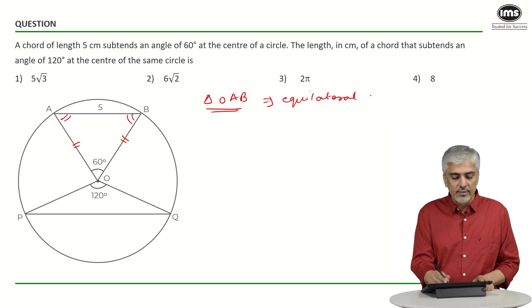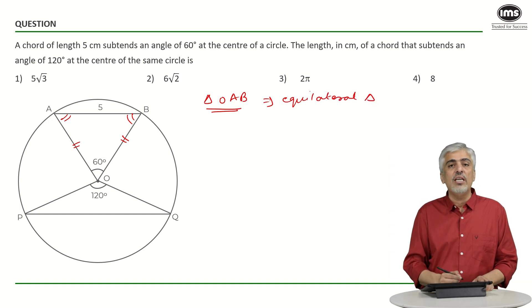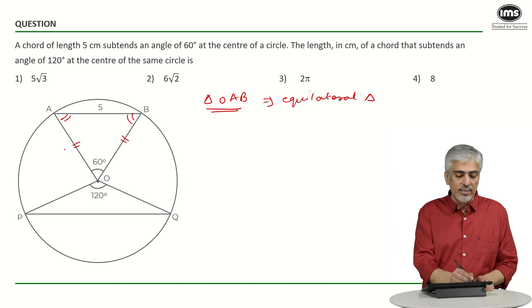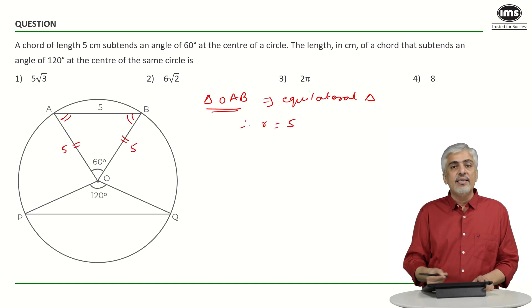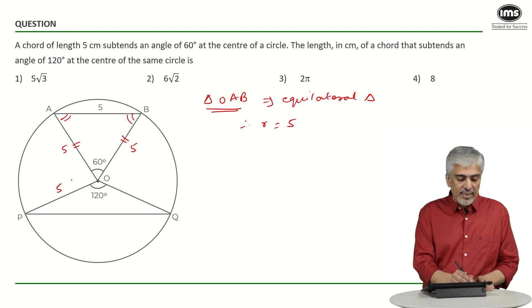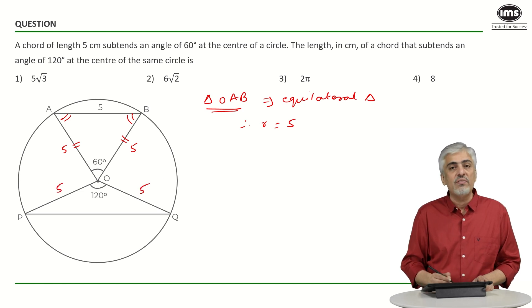Now, once I got triangle OAB is an equilateral triangle, I know that all sides are 5, 5, 5 and therefore, my radius is 5. That radius continues down making OP and OQ also 5 and 5. Now, I want to find PQ.